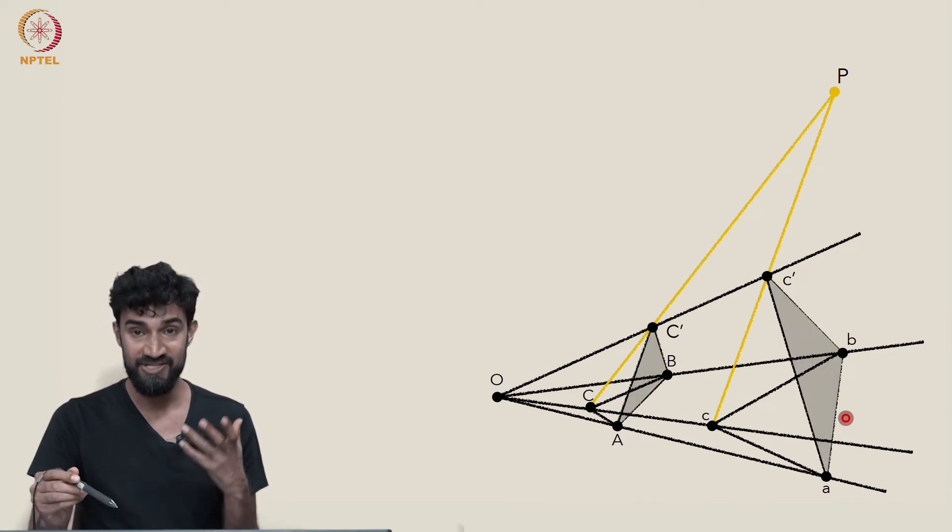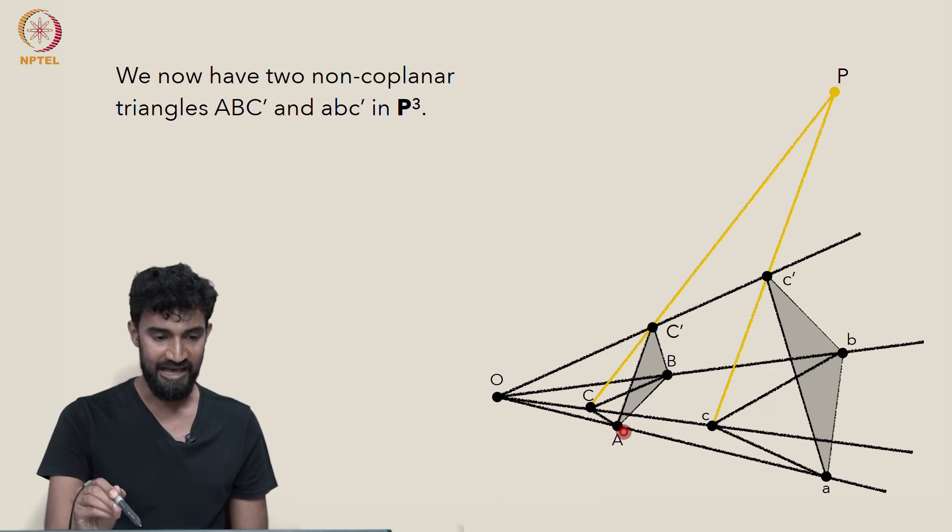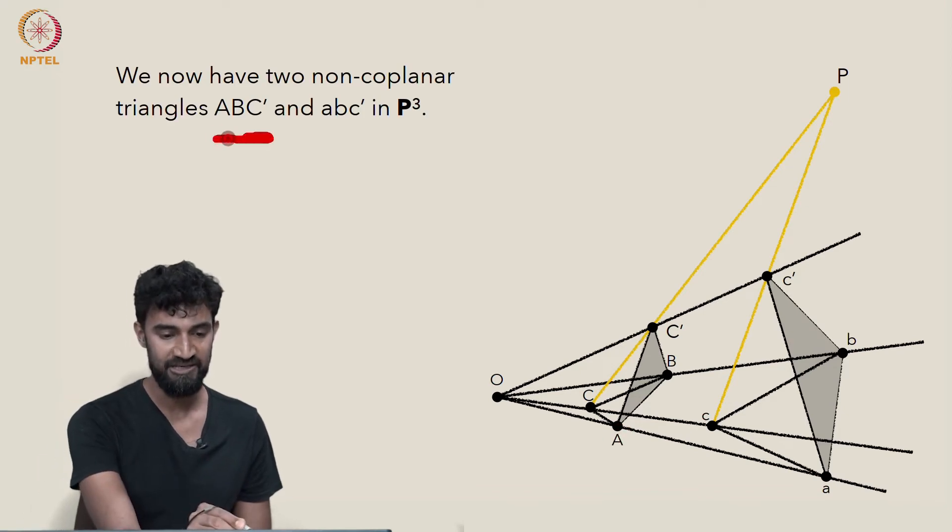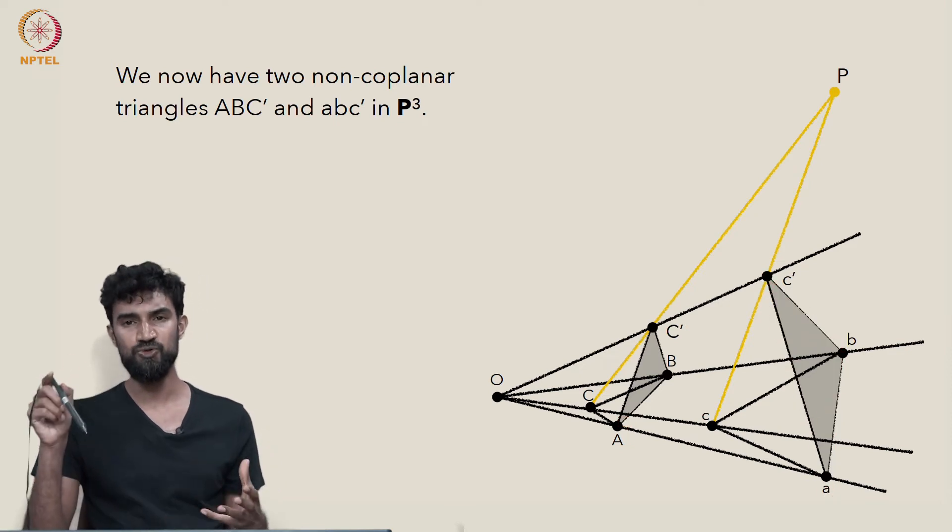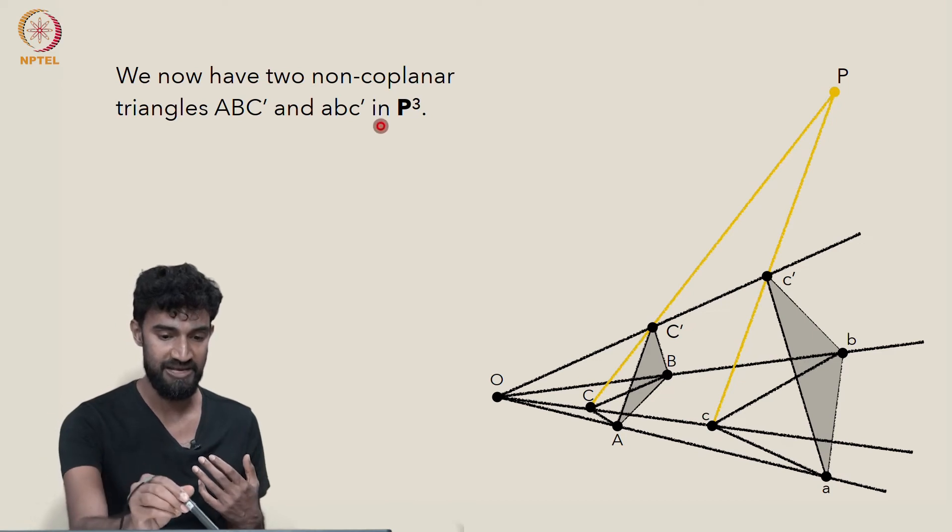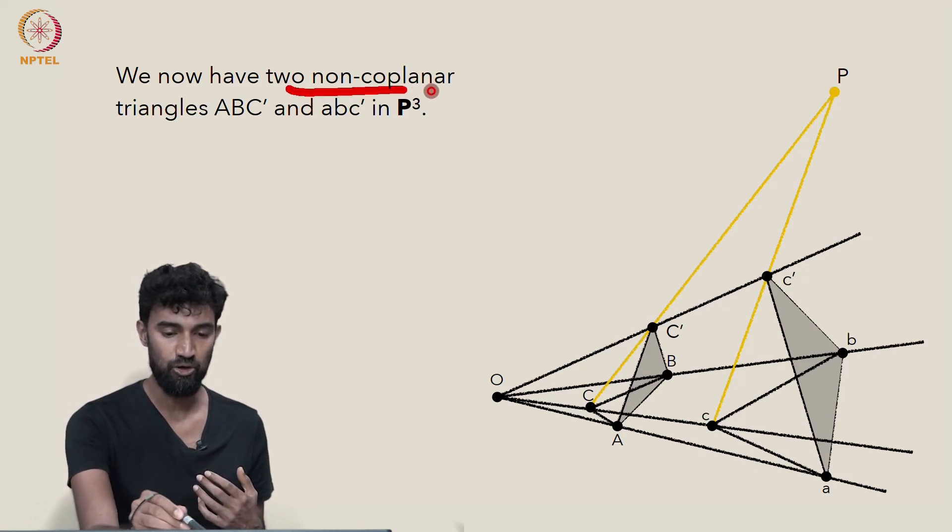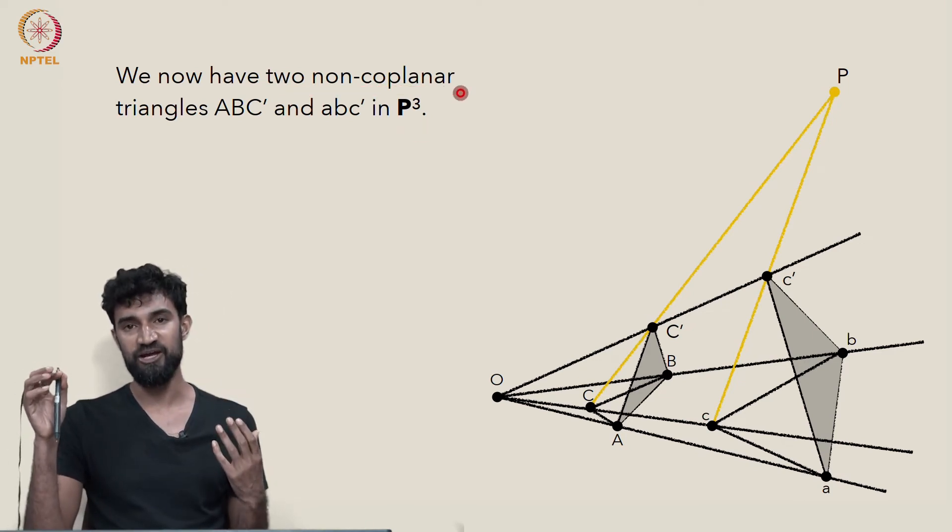So let's consider these new triangles, capital A, capital B, C prime, and little A, little B, little c prime. These are two triangles that live in P3, and they're non-coplanar. They don't share a plane.